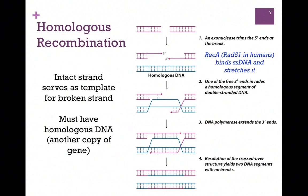Now let's look at homologous recombination. In this case, an intact strand serves as the template to repair the broken strand. We have to have homologous DNA — another copy of the gene — and that's why this isn't the most common mechanism, because we don't have two copies of every gene.